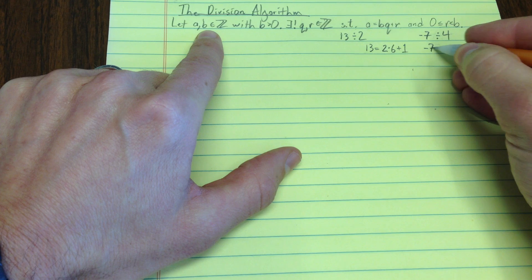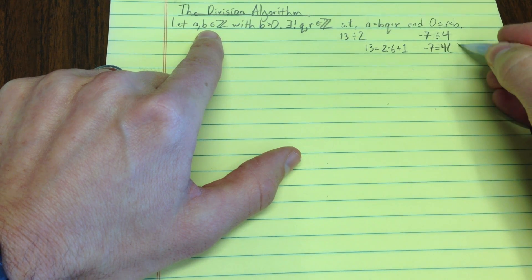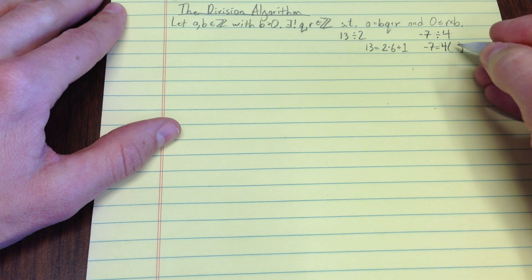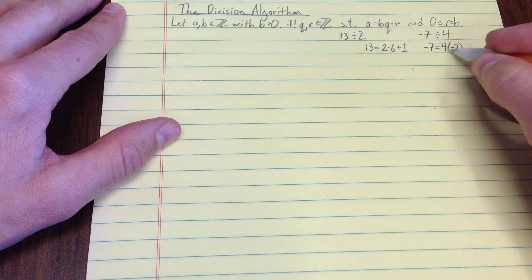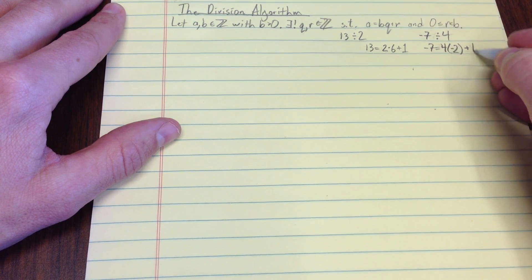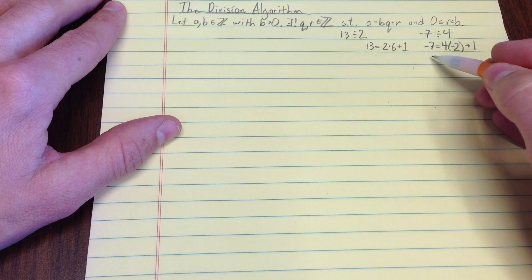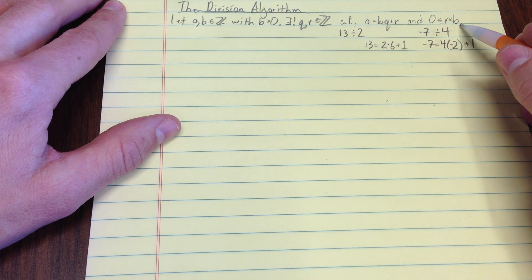Well, negative 7, I guess I'm going to have to have a negative number for q. If I put in negative 2 here, notice that's negative 8 plus 1 equals negative 7. Well, 1 satisfies the remainder.